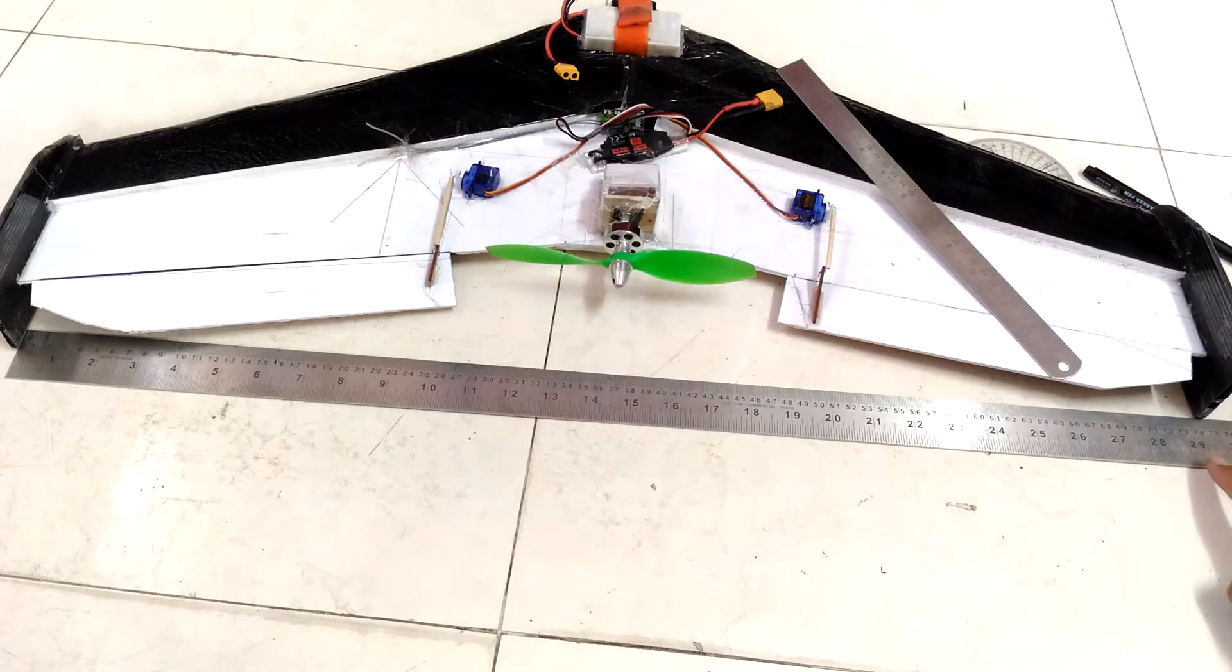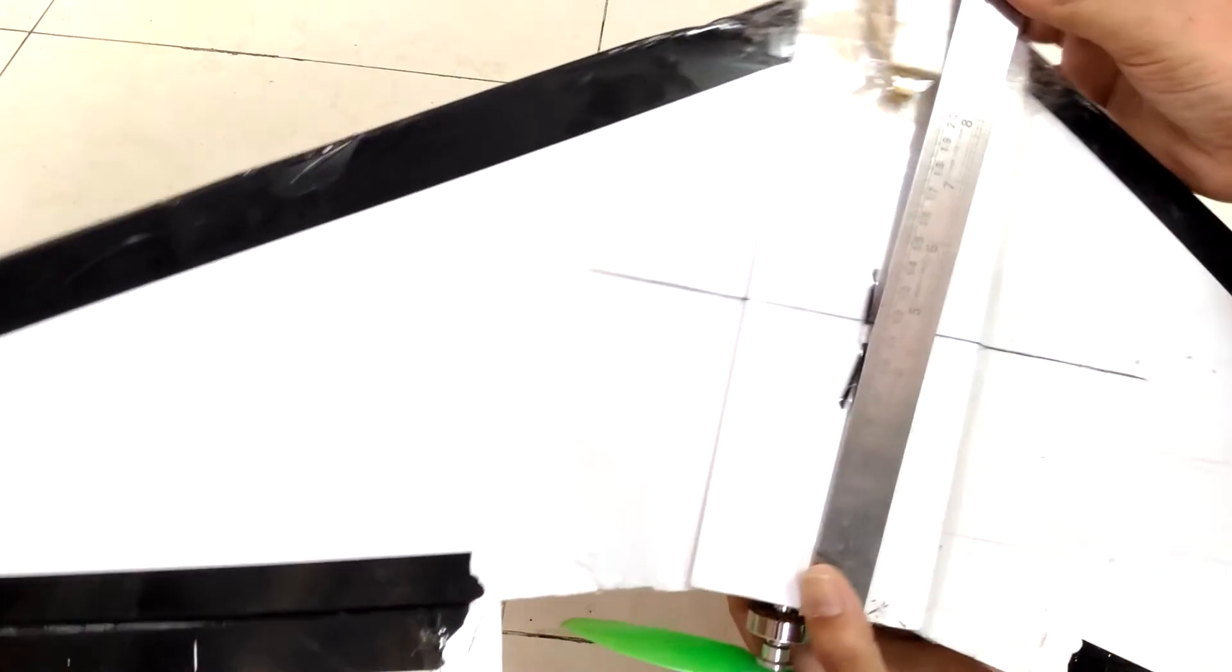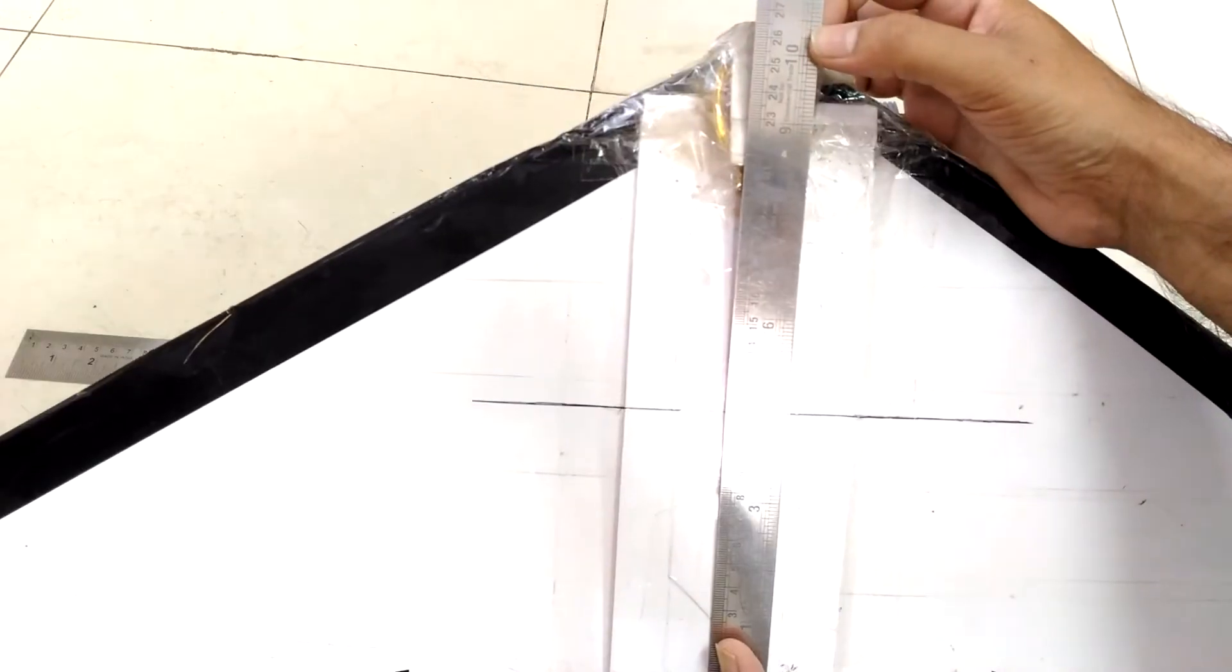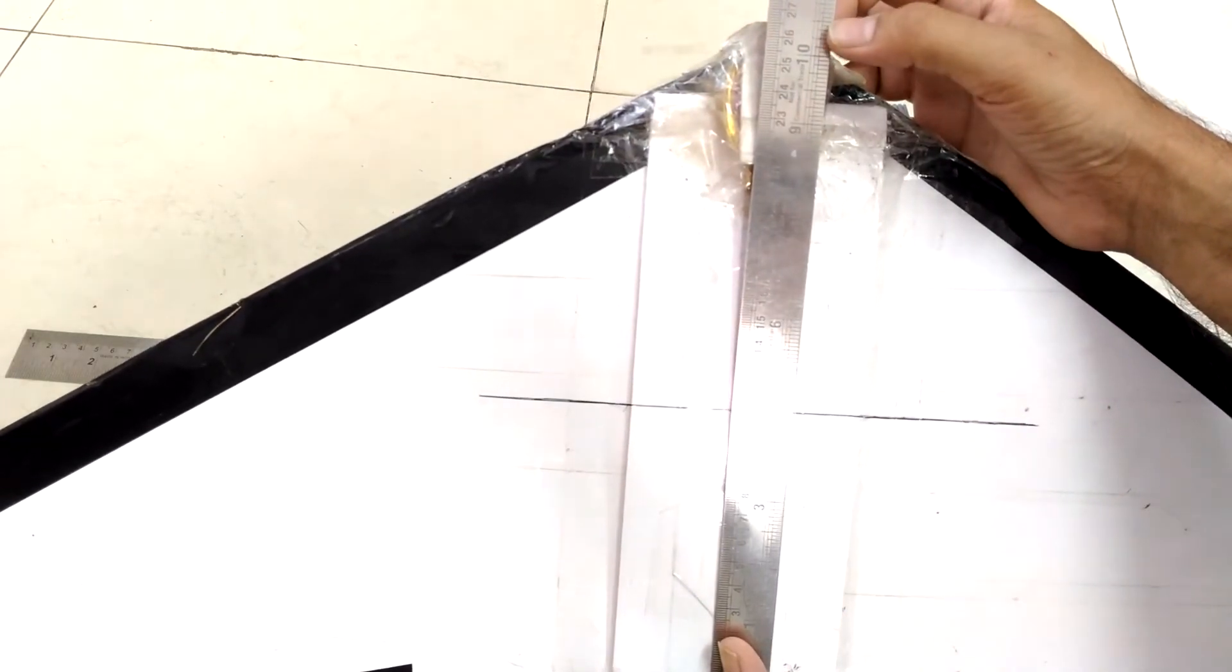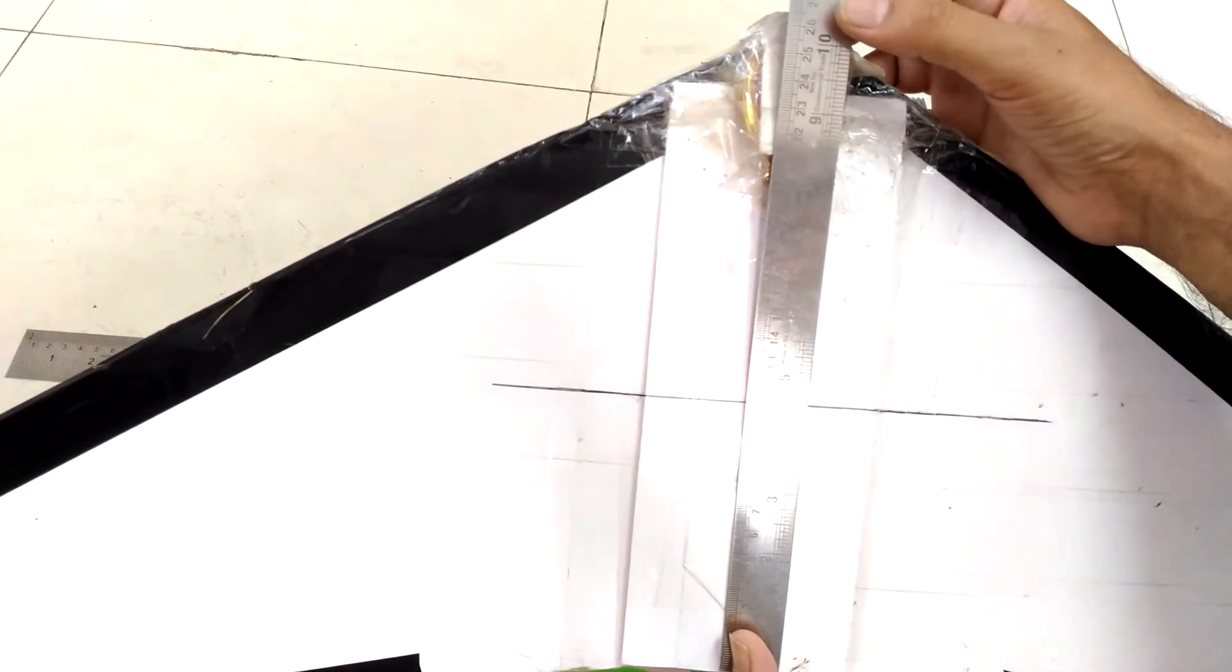Let's measure the root cord. Okay, so the root cord is 27 centimeters, 270mm. That's the root cord.